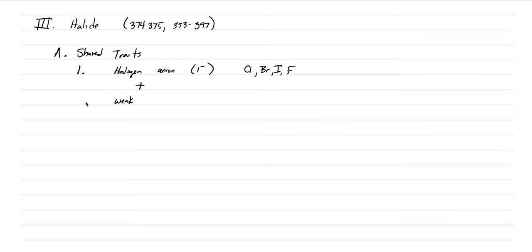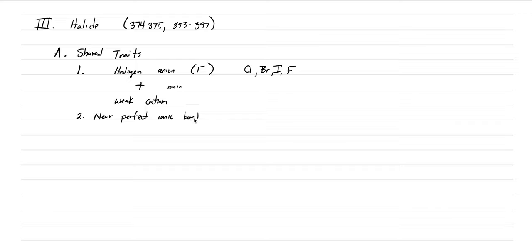These cations are on the far left side of the periodic table, and this bonding is an ionic bond. The nature of the bonding is nearly perfect ionic bonding. Because the electronegativity difference between the anion and the cation is so great, we have almost perfect ionic bonding.